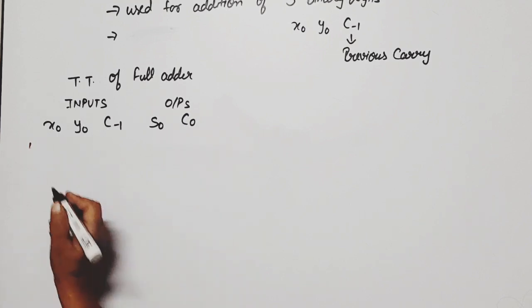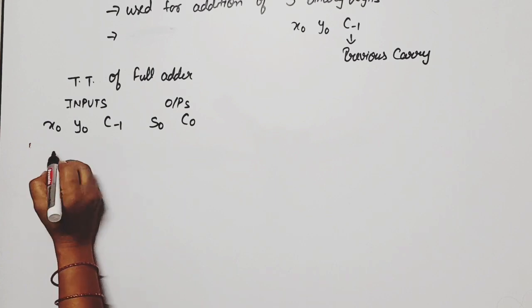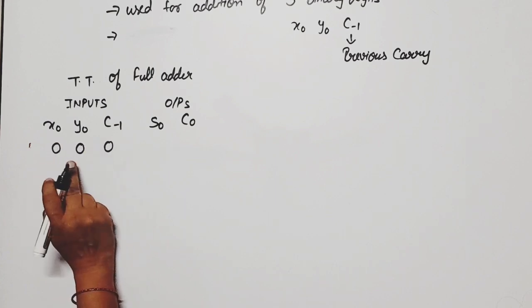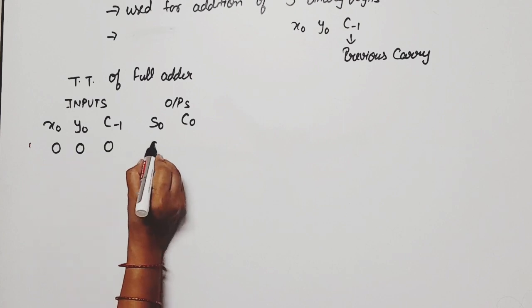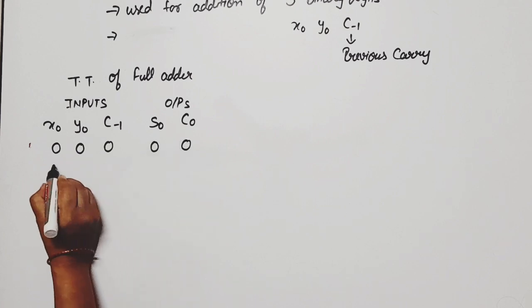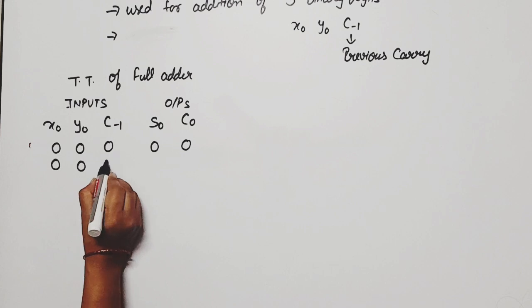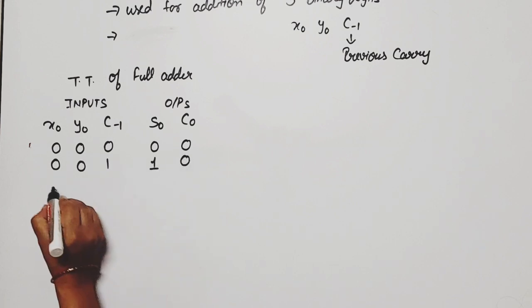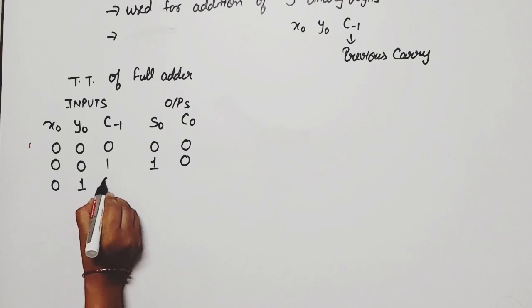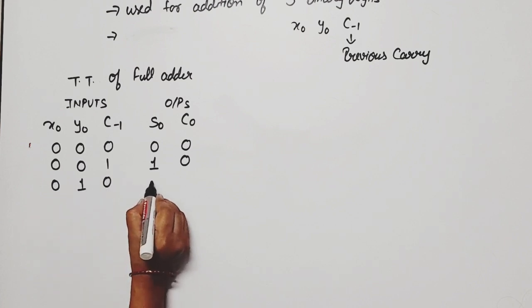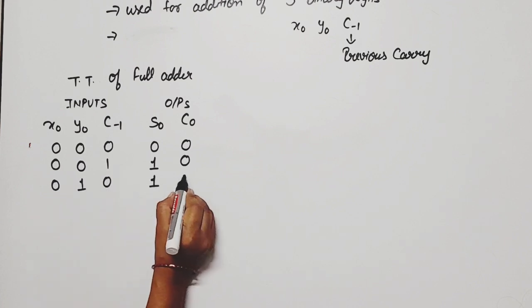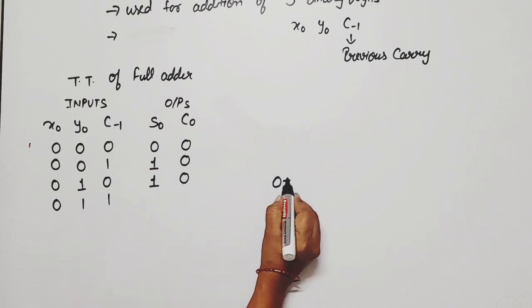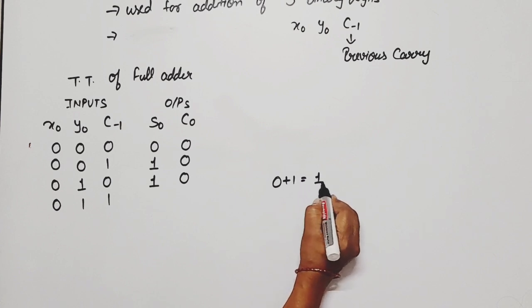Now three input variables means how many possible combinations? Eight. First combination 0, 0, 0. Addition of 0, 0, 0 will be 0, carry 0. Next combination 0, 0, 1. What is the sum? Sum 1, carry 0. Now 0, 1, 0. Addition of all three bits, sum will be 1, carry 0. Now 0, 1, 1, sum will be 0 plus 1, 1 is equal to 1, 1. Again 1 add, so 1, 0. Sum is 0, carry is 1.